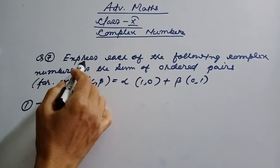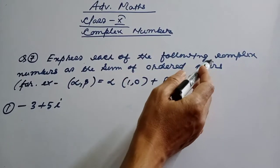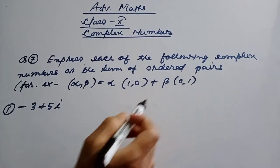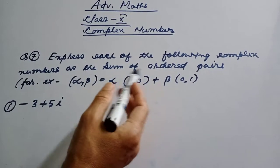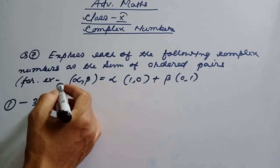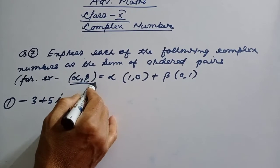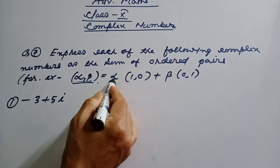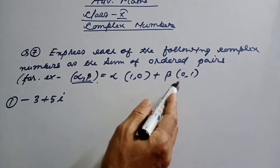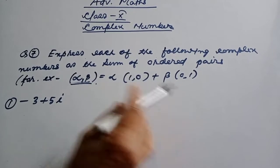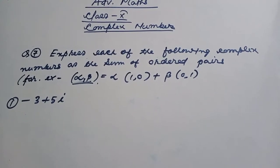Question number 7 to KCMR: express each of the following complex numbers as the sum of ordered pairs. For example, J alpha, beta equal to alpha times 1,0 plus B times 0,1.